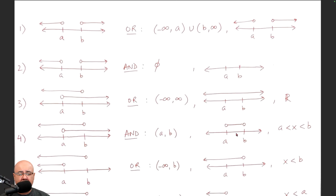And if you have this sort of an answer and you wanted to write it as an inequality, you put the X in the middle — you're saying X is between A and B. So X is greater than A, meaning X is to the right of A, and X is less than B, meaning X is to the left of B.